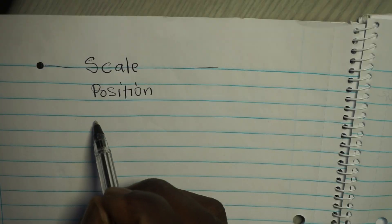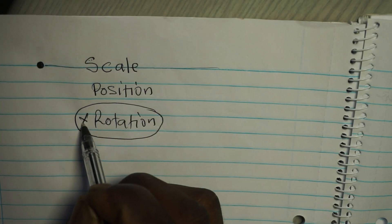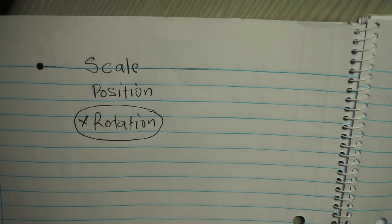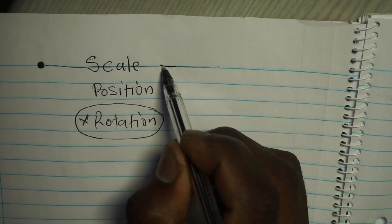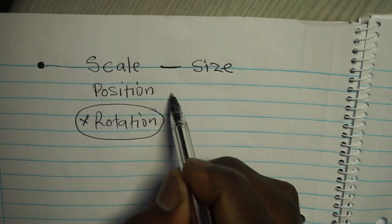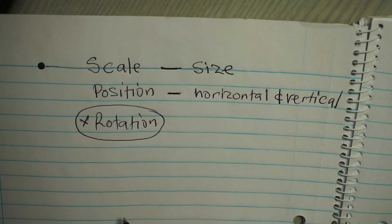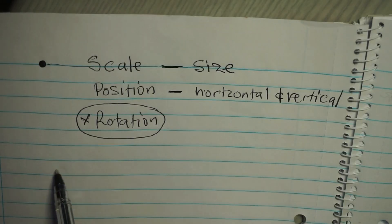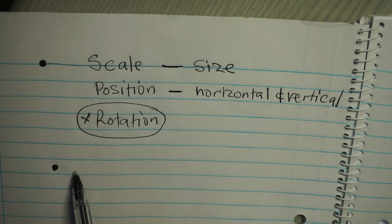You are telling the video editing software to keep certain particular values — the scale, the position, and also the rotation. But for now let's just exclude the rotation, as it's not much in use. So let's talk about the scale and the position. The scale refers to the size — how big the file is on the screen. The position talks about the horizontal and the vertical: where the video is on the x-axis and on the y-axis.